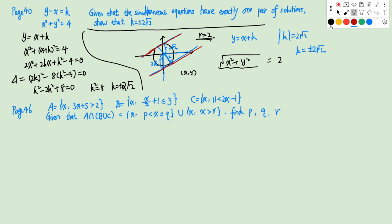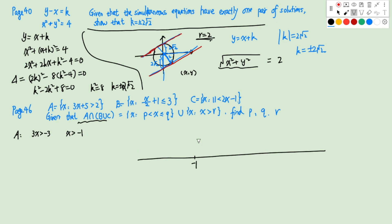Next question. We have three sets and some set operations, and we want to find the values. Set A is 3x+5 > 2, so 3x > -3, meaning x > -1. On the number line, A is x > -1. Set B is x/2 ≤ 2, so x ≤ 4. On the number line we use a solid dot at 4 and go to the left. Set C is 12 ≤ 2x, so x > 6.